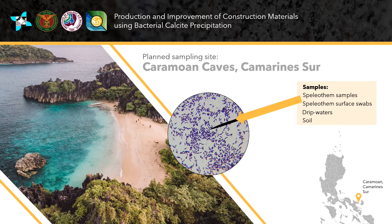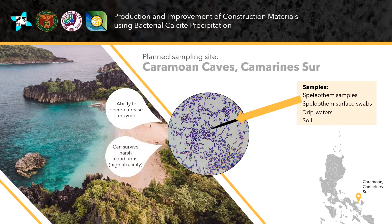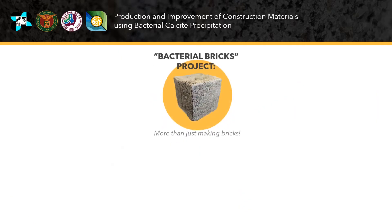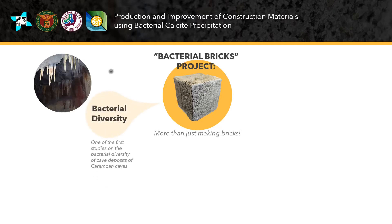We will be looking for characteristics that will make them favorable to use in bacterial brick production. Some desirable characteristics include the ability to secrete urease enzyme, the ability to survive harsh conditions such as high alkalinity, and the ability to latch on and grow on surfaces of aggregates such as sand. Our project is also beyond just making bricks — it will also be one of the first studies on bacterial diversity of cave deposits of Karamoan caves.